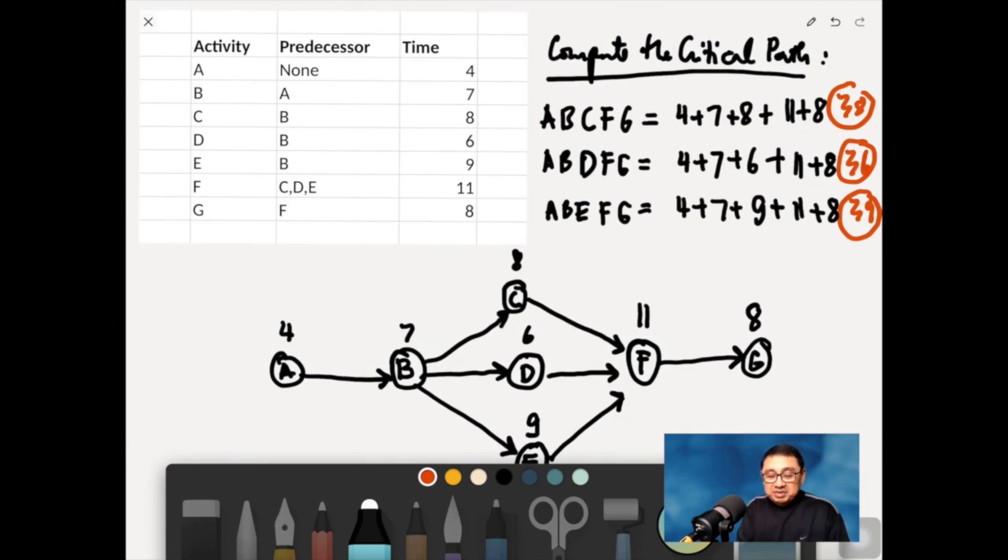And then 4 plus 7, plus 9, plus 11, plus 8. And my math is still okay.